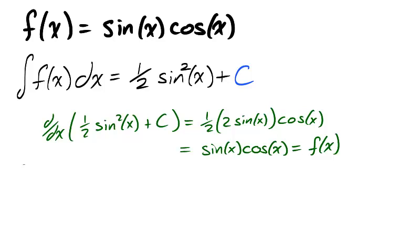It may seem trivial, but the constant c is crucial. There does not exist a unique antiderivative for a function. Functions have the possibility of being an antiderivative without appearing to fit the model of 1 half sine squared x plus c.